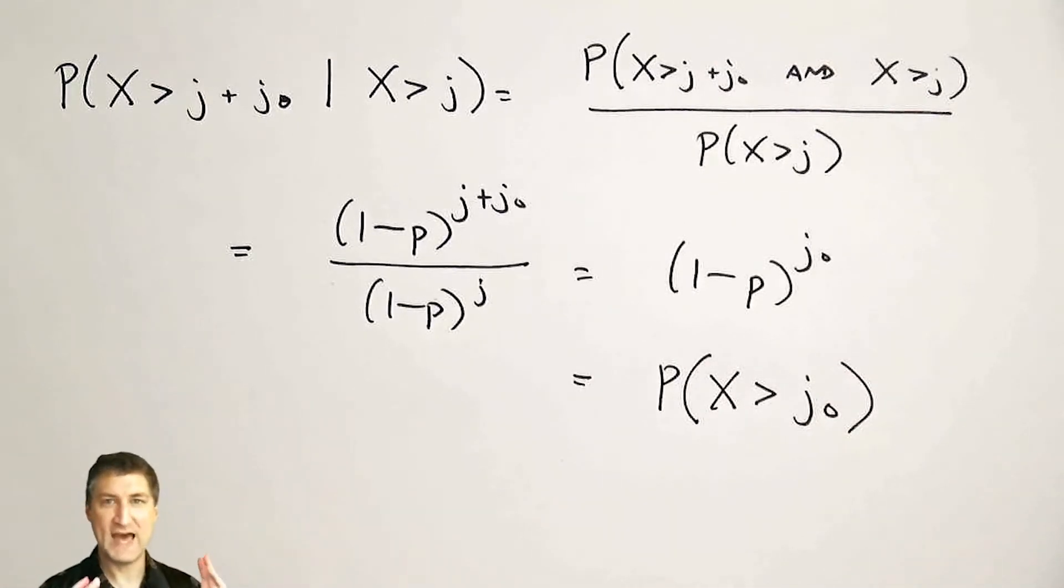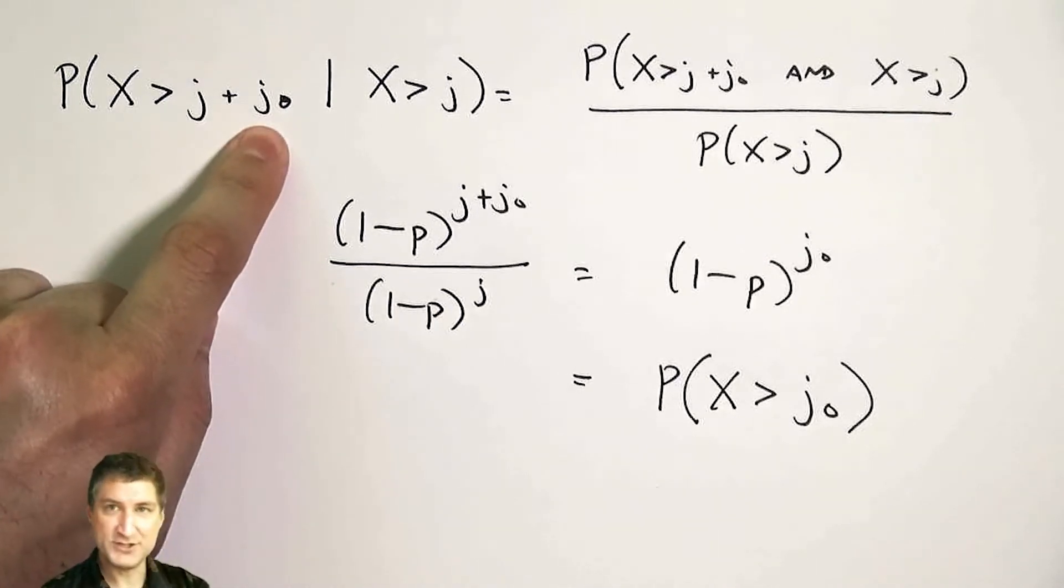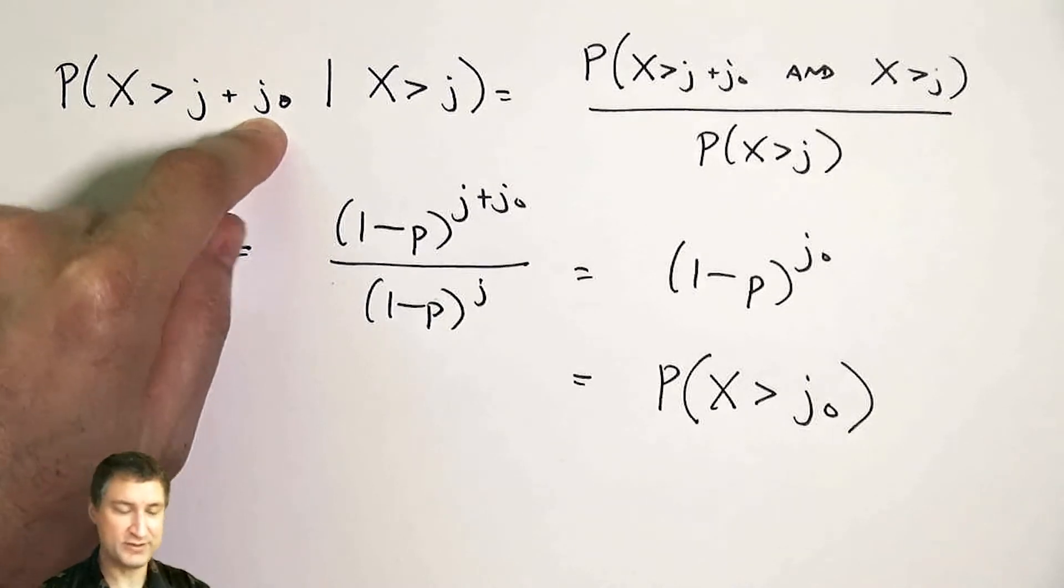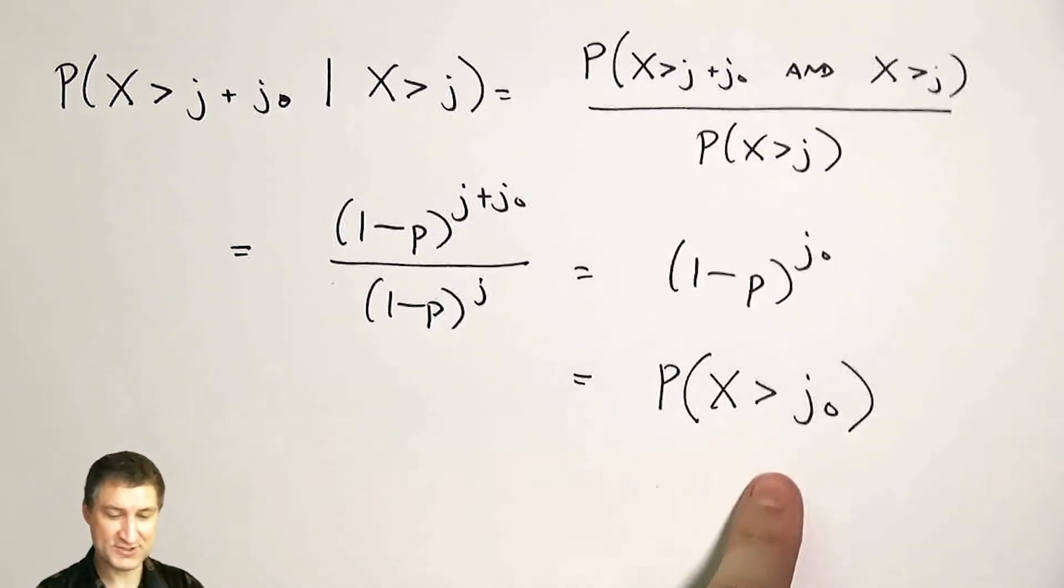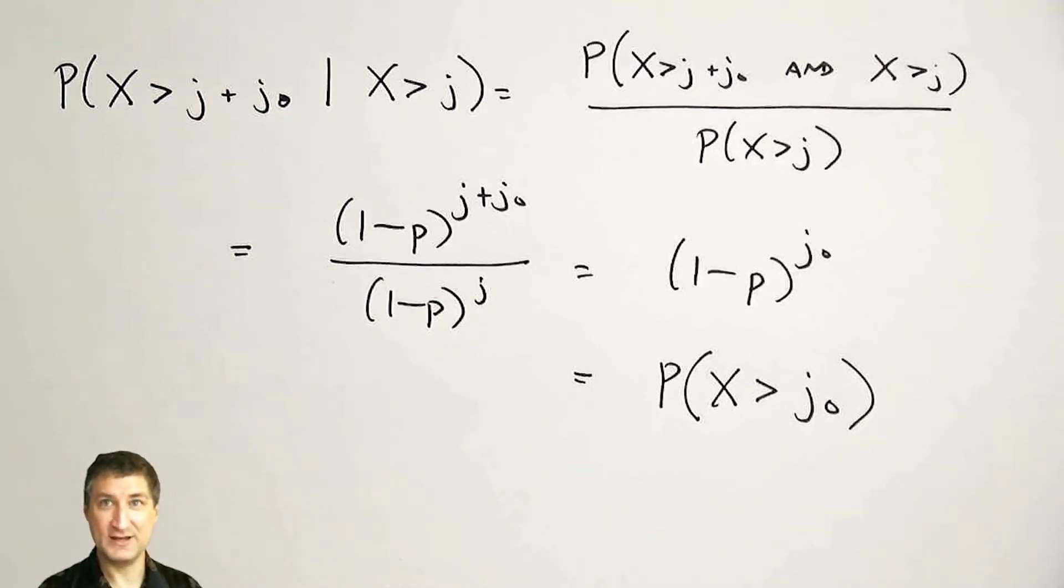This is like saying, if I haven't succeeded in the first j trials, and I want to know what's the probability that takes me j0 more trials to begin with, well, it's actually just the probability that I needed j0 more trials from the very first place, right? So it's like the coin doesn't remember that I failed j times. And it's the same as if I started out entirely and just flipped it j0 times.